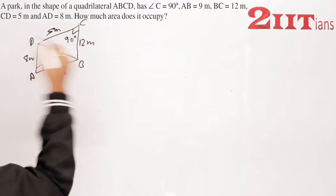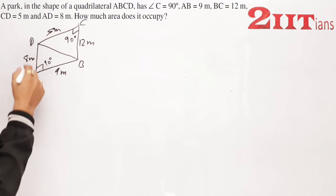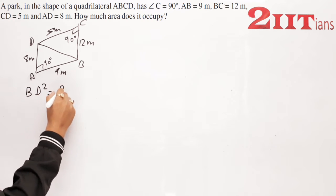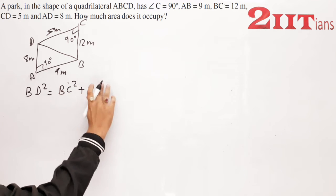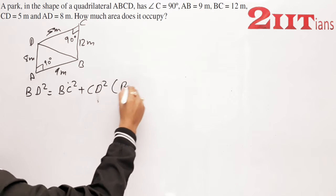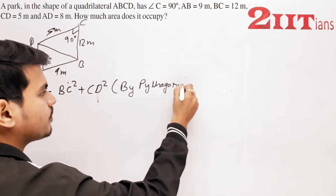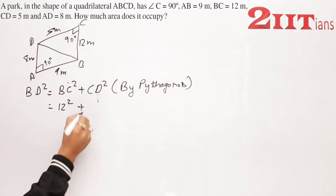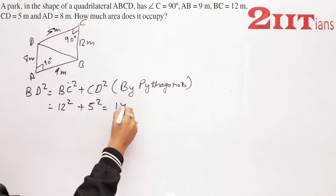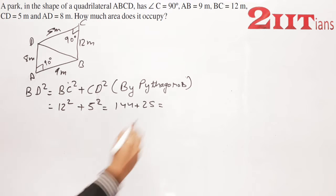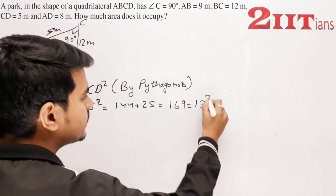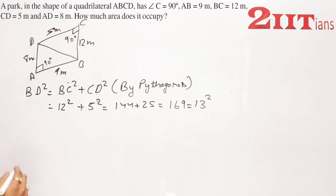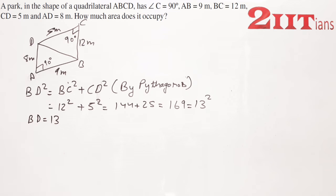और यहाँ हम लोग एक line draw करेंगे। 90 degree है तो Pythagoras theorem apply होगा। तो देखिए, BD² = BC² + CD² by Pythagoras। BC² = 12² = 144, plus CD² = 5² = 25। तो ये 144 + 25 = 169, जो कि 13² है। मतलब BD = 13 meters।